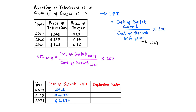The CPI in 2019 equals the cost of basket in 2019 (920 dollars) divided by the cost of basket in the base year, which is also 2019 (920 dollars), times 100. That gives us 920 ÷ 920 = 1, times 100 = 100. The CPI in 2019 is 100. The CPI of your base year must always equal 100.